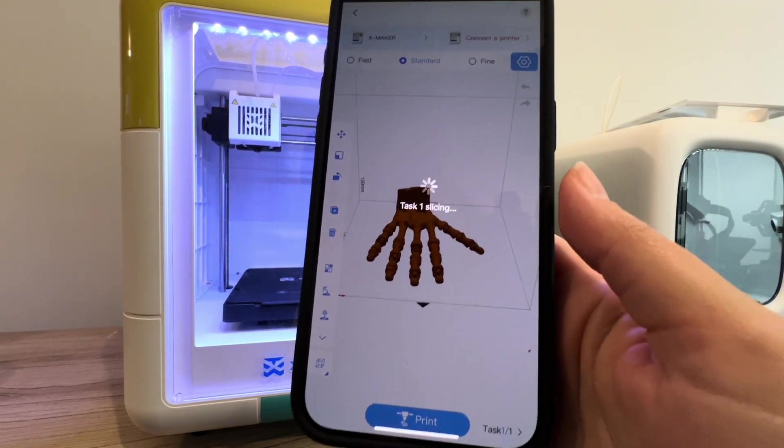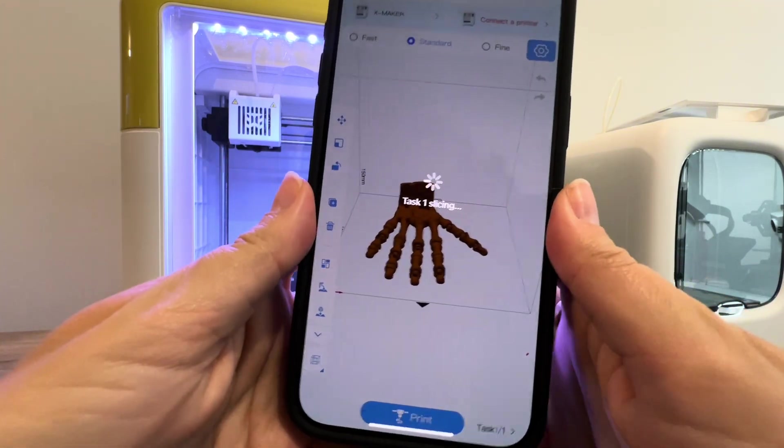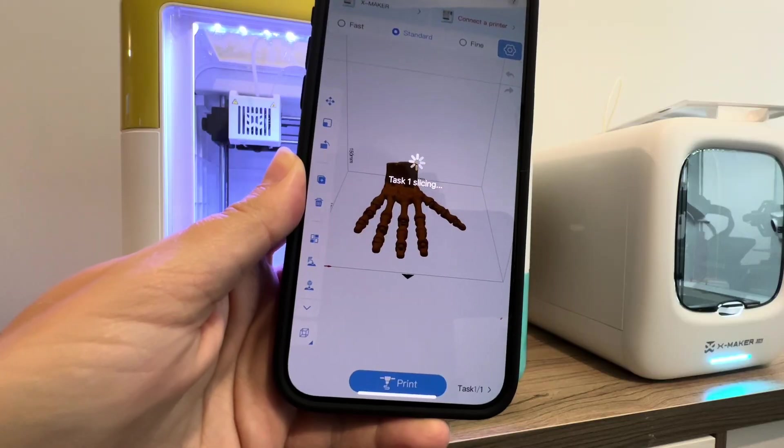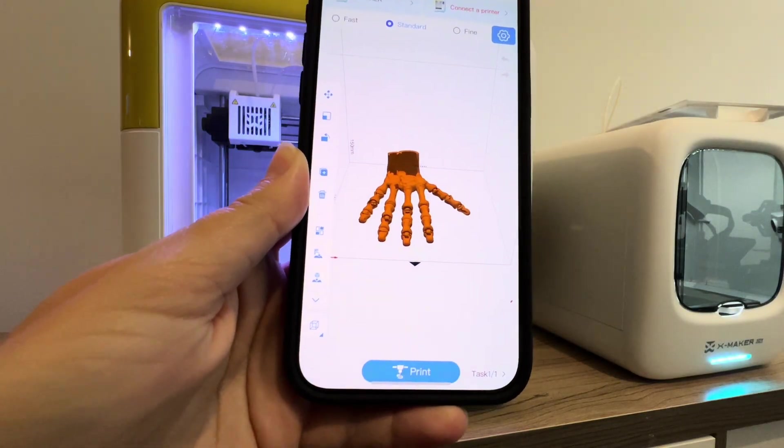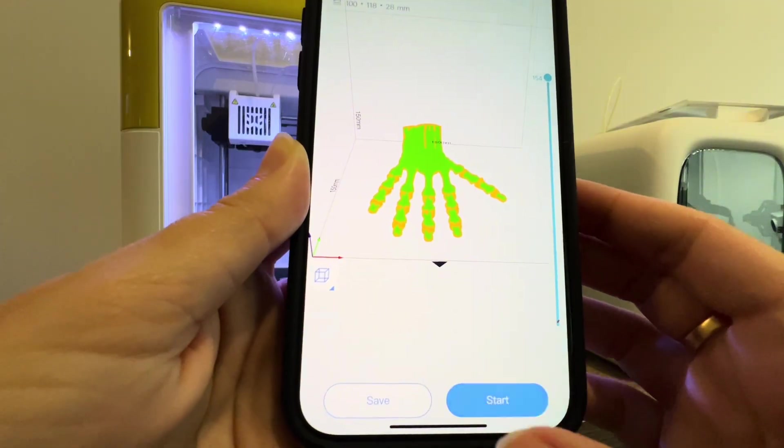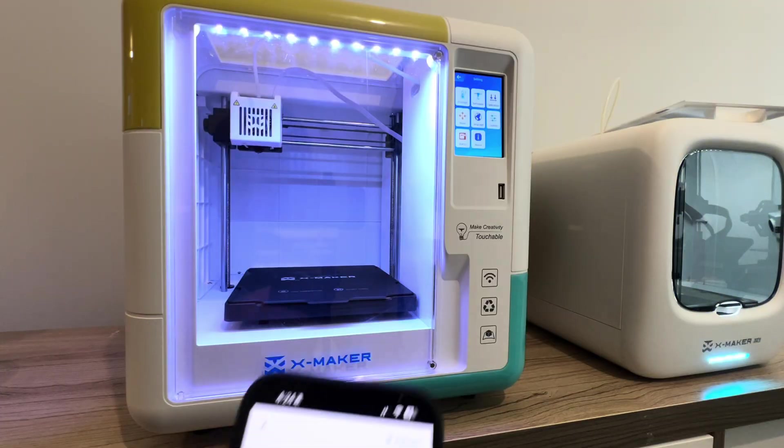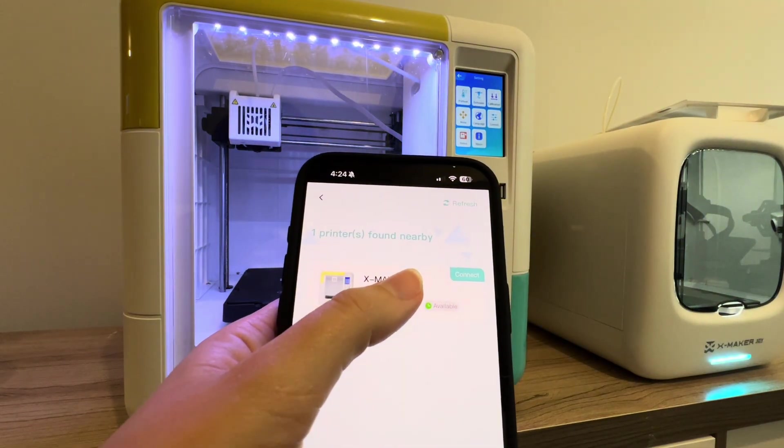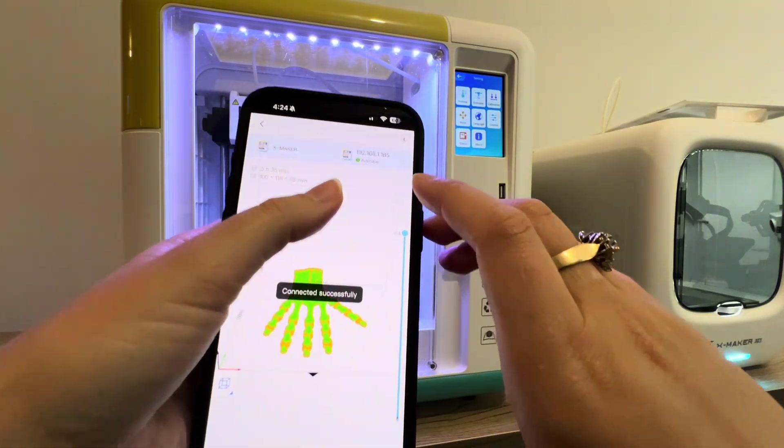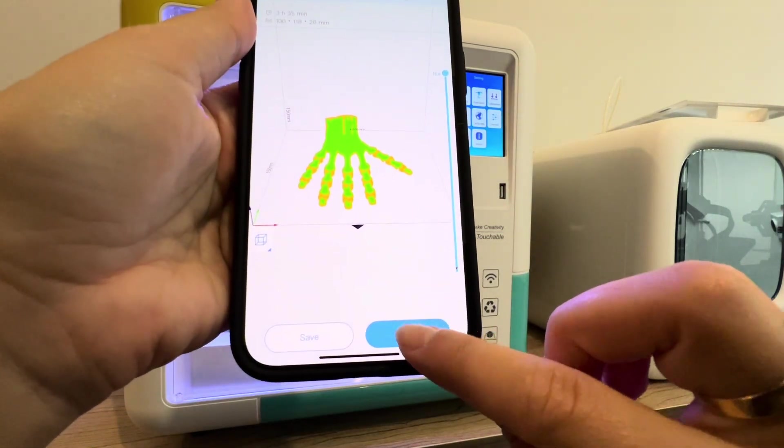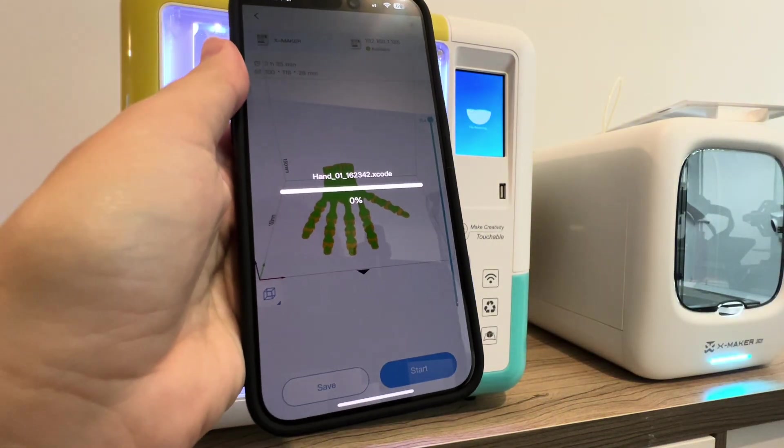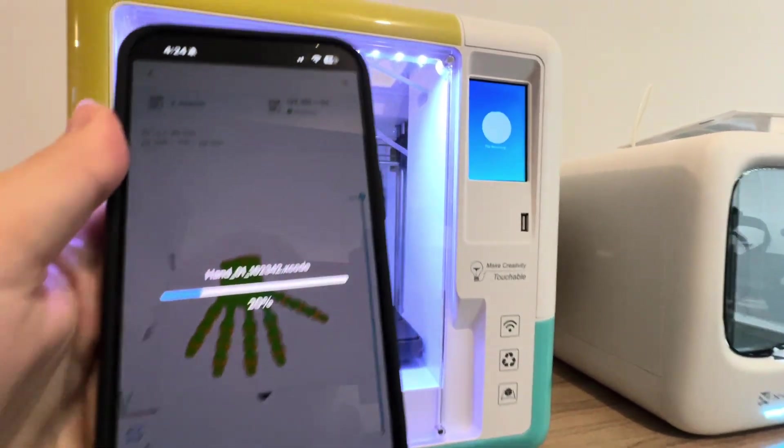Slicing just means creating the code for the printer to be able to print it layer by layer, to give the 3D printer the code to print it properly. You can see now that the blue plate was gone. We're going to click on our printer, connect, and then press start and it's going to upload that file right to the AOC'd Xmaker.